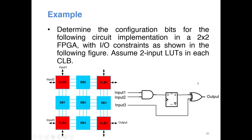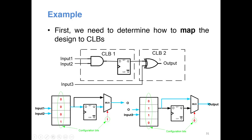Let's come back to our example. The overall aim: I have this small circuit and this FPGA, and my aim is to implement this circuit using this FPGA. Assume each CLB has a two-input lookup table. The first step is to map each part of the circuit to a CLB — this is called the mapping process. In IC design also we saw a mapping step where you map elements to the standard library. For FPGAs the only standard library component is CLBs, so the aim is to map portions of your circuit to each CLB.